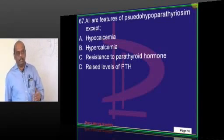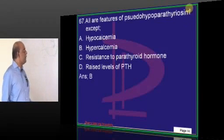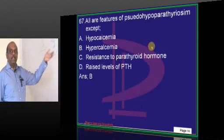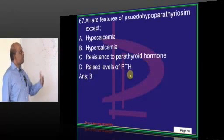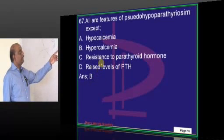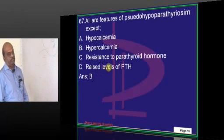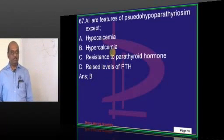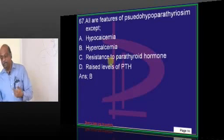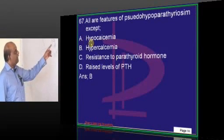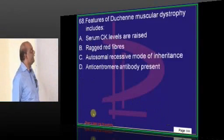Pseudohypoparathyroidism means PTH is produced but receptors are not responding, so PTH levels will be elevated — there is resistance to PTH. The function of PTH is to retain calcium from the kidney and make phosphate be lost into urine. So in pseudohypoparathyroidism you find hypocalcemia, not hypercalcemia.